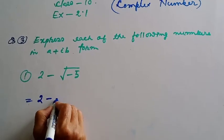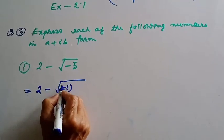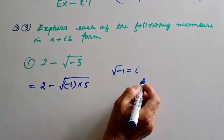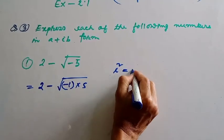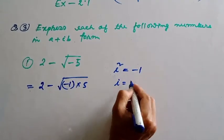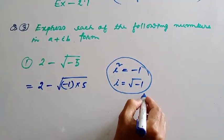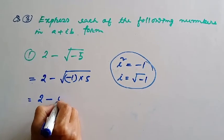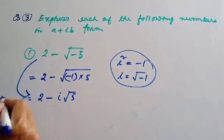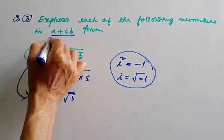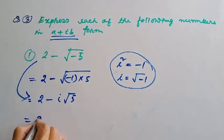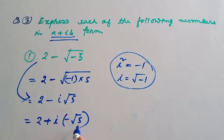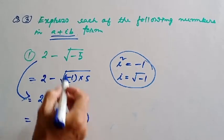2 minus root over minus 5 equals 2 minus root over (minus 1 into 5). Now, root over minus 1 is equal to i, because i square is equal to minus 1, so i is equal to root over minus 1. Therefore this becomes 2 minus i root over 5, which gives us 2 plus i in a plus ib form.